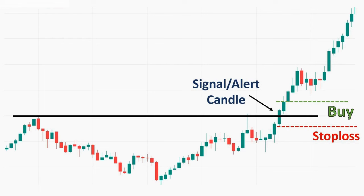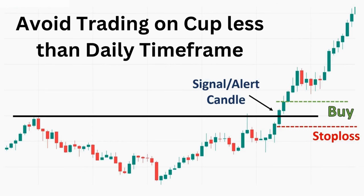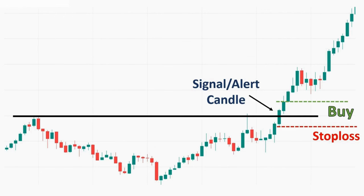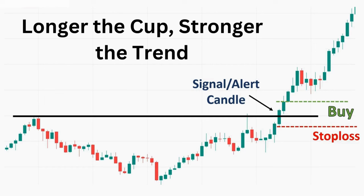Before trading on this pattern, let me give you some pro advice. If you are looking to catch a good move in the market or make huge returns on your investment, avoid trading on cups which are formed on less than the daily time frame. The cup pattern can be formed on monthly, weekly, daily, hourly, or 15-minute time frames, but if you want to catch a strong uptrend, avoid trading on cups formed on less than one day. Look for patterns formed on daily, weekly, or monthly — especially weekly and monthly time frames. The second thing is that longer the cup, stronger will be the trend. You can find cup patterns which are one year, two years, or even five to ten years long, and trading is mostly preferred on long cups.